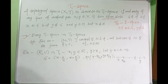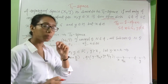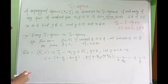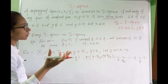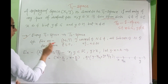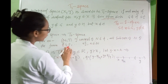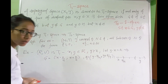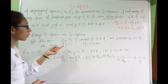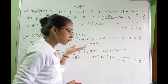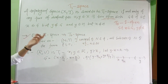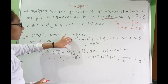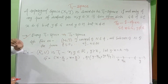For example, let's take a topology on the natural numbers. T consists of the natural numbers, the empty set, and all subsets of N of the form {1, 2, ..., N}. So all these subsets up to N are open sets.